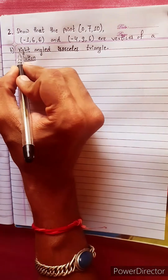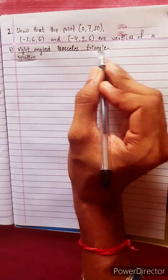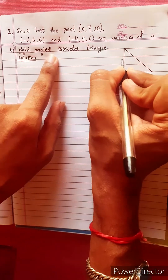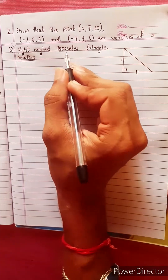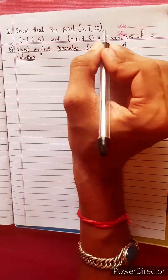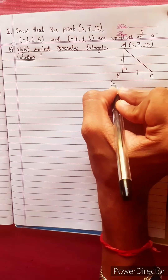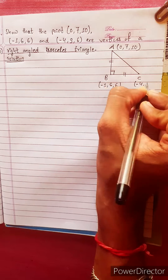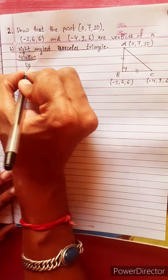This point is a right angle. We need to prove it is an isosceles triangle — two sides equal — and that the right angle is 90 degrees. I will give names to the endpoints of the lines: A, B, C. The coordinates are: A = (0, 7, 10), B = (-1, 6, 6), and C = (-4, 9, 6). We will use the distance formula.